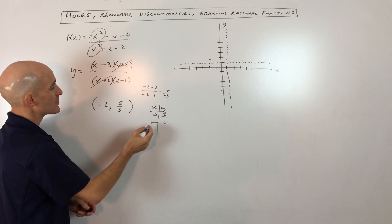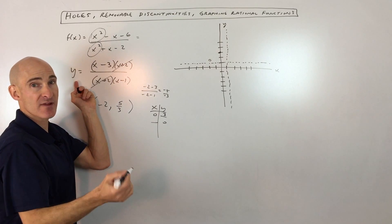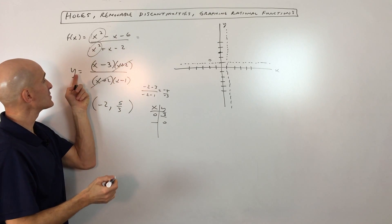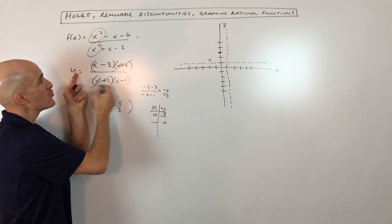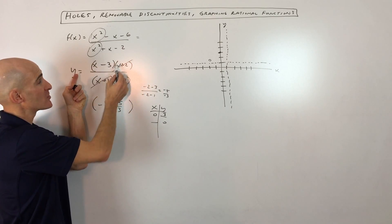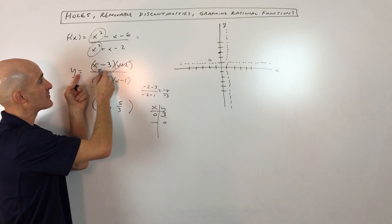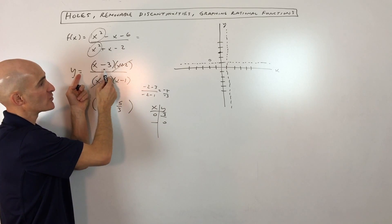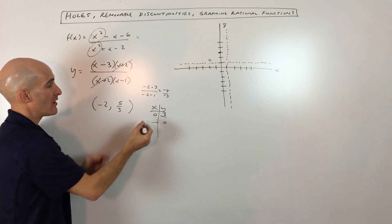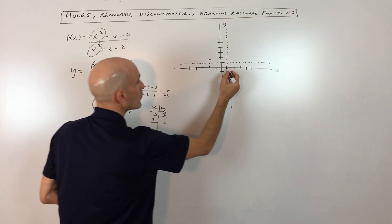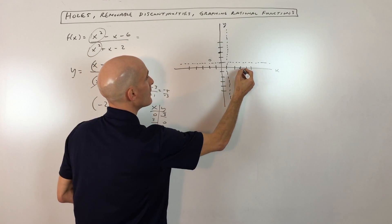And if we set y to 0, now follow me on this one. Sometimes students get a little bit confused by this. If you set y to 0, the only way that y will be 0 is if the numerator is 0. Because if the numerator is 0 and the denominator is not 0, that fraction is equal to 0. So by setting the top to 0, you can see that x equals 3 is going to be our x-intercept. So that's 1, 2, 3.